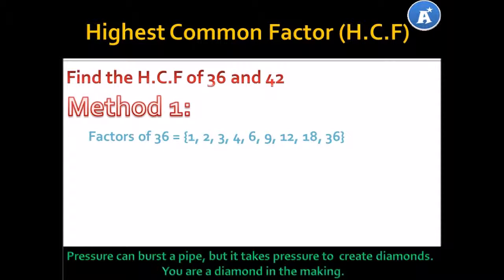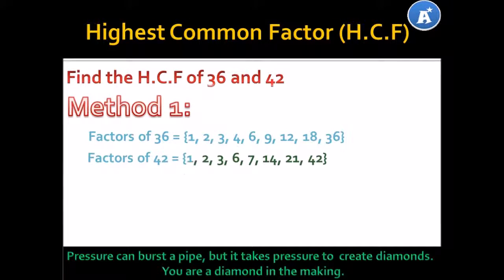Now, let's list the factors of 42. The factors of 42 are 1, 2, 3, 6, 7, 14, 21 and 42. Now, the key word here is highest common factor. So, let's look at all the factors that 36 and 42 have in common. They are 1, 2, 3 and 6.